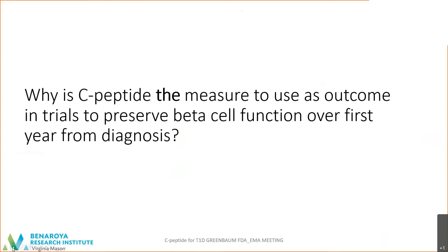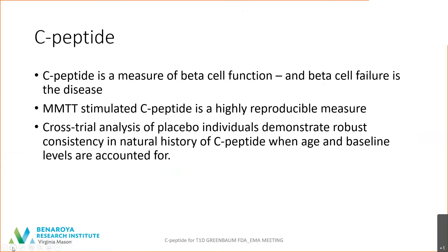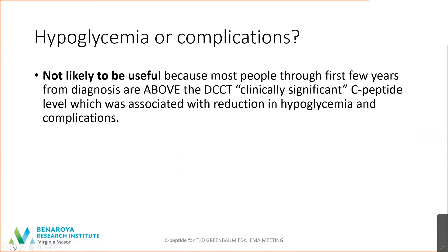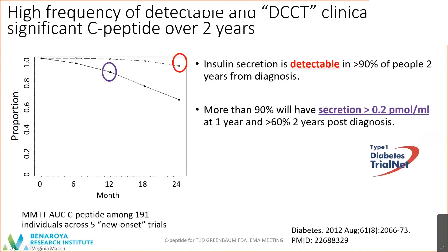But why is C-peptide the measure to use as an outcome in trials to preserve beta cell function over the first year from diagnosis? First, it is a measure of beta cell function — demonstrated repeatedly — and beta cell failure is by definition what type 1 diabetes is. MMTT-stimulated C-peptide is a highly reproducible measure tested in many different settings and places, and cross-trial analysis demonstrates robust consistency when you adjust for age and baseline. But what about hypoglycemia or complications? This is not likely to be useful because most people through the first few years of diagnosis are above the DCCT level of clinically significant C-peptide, which is associated with a reduction in hypoglycemia and complications.